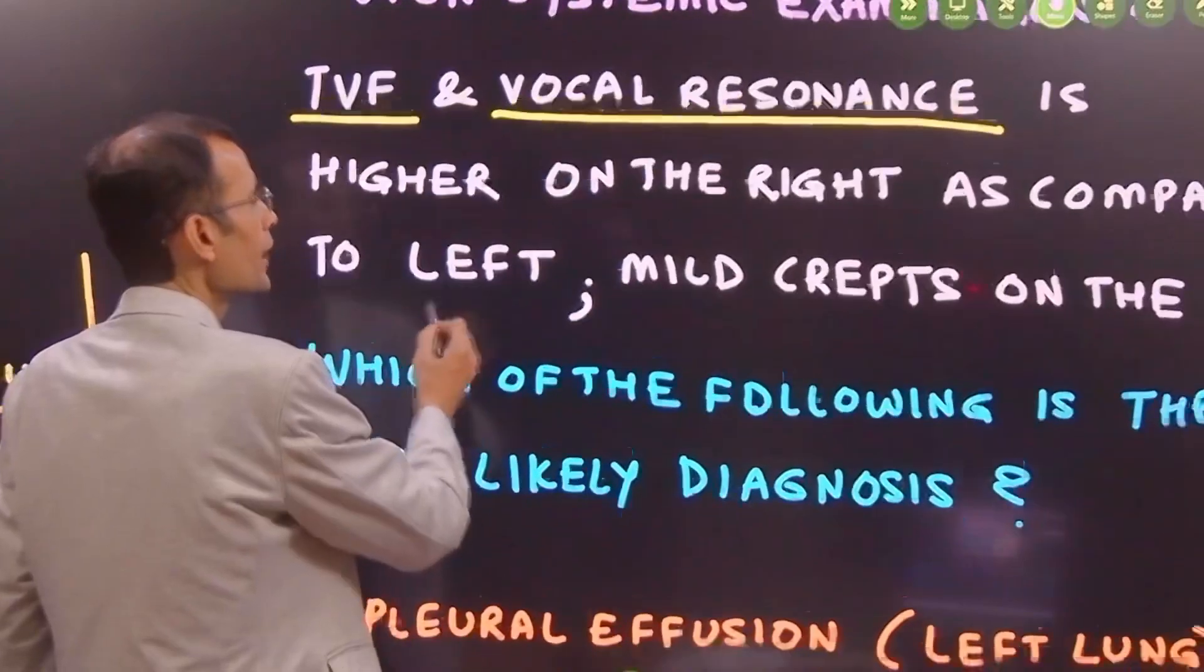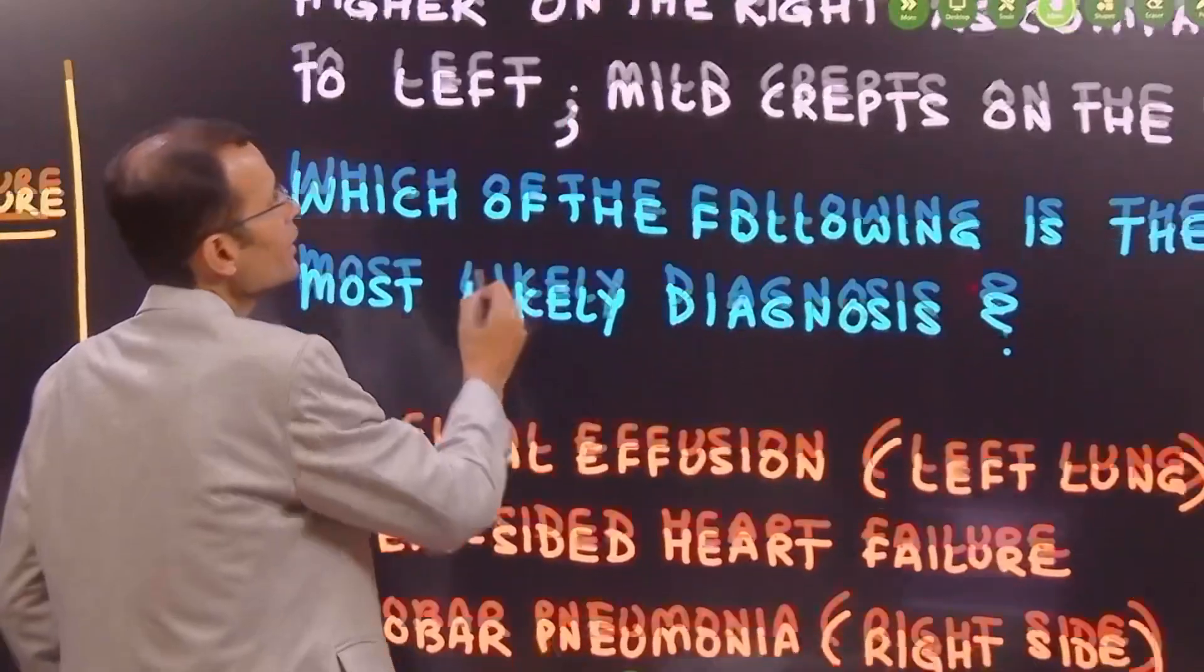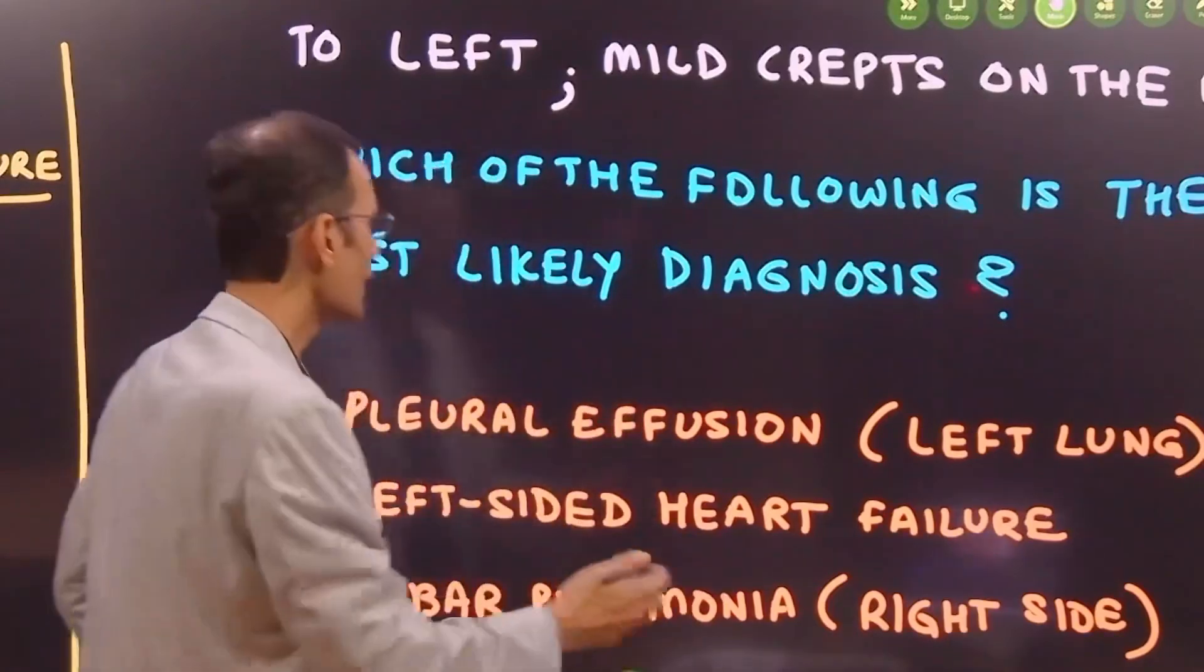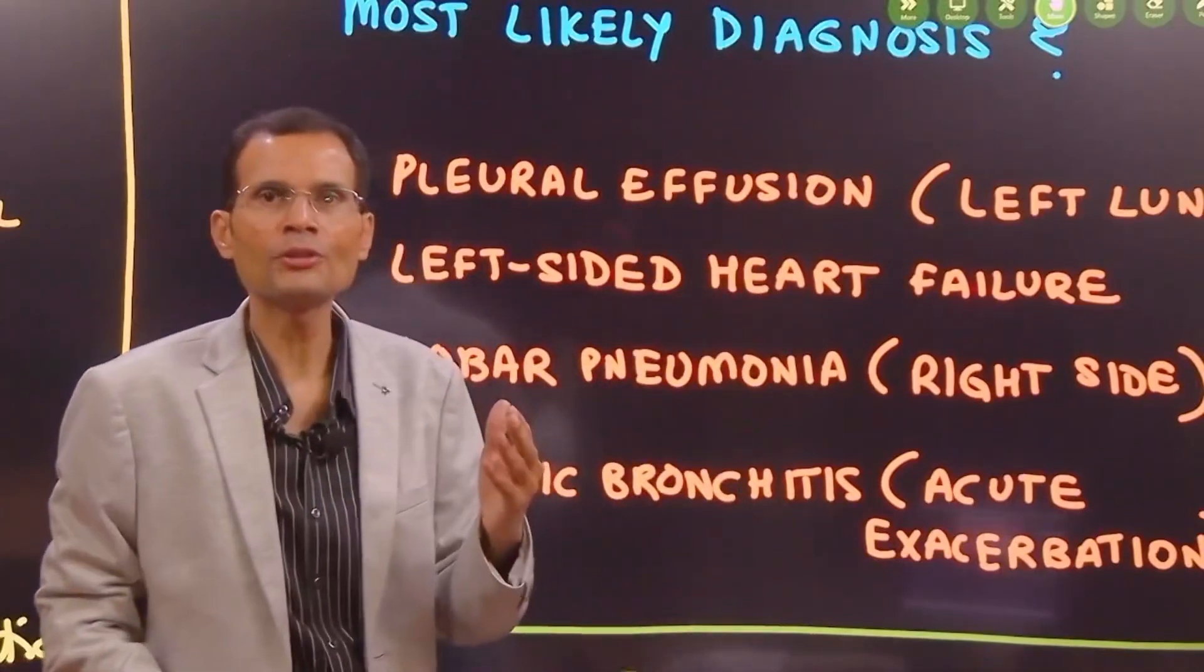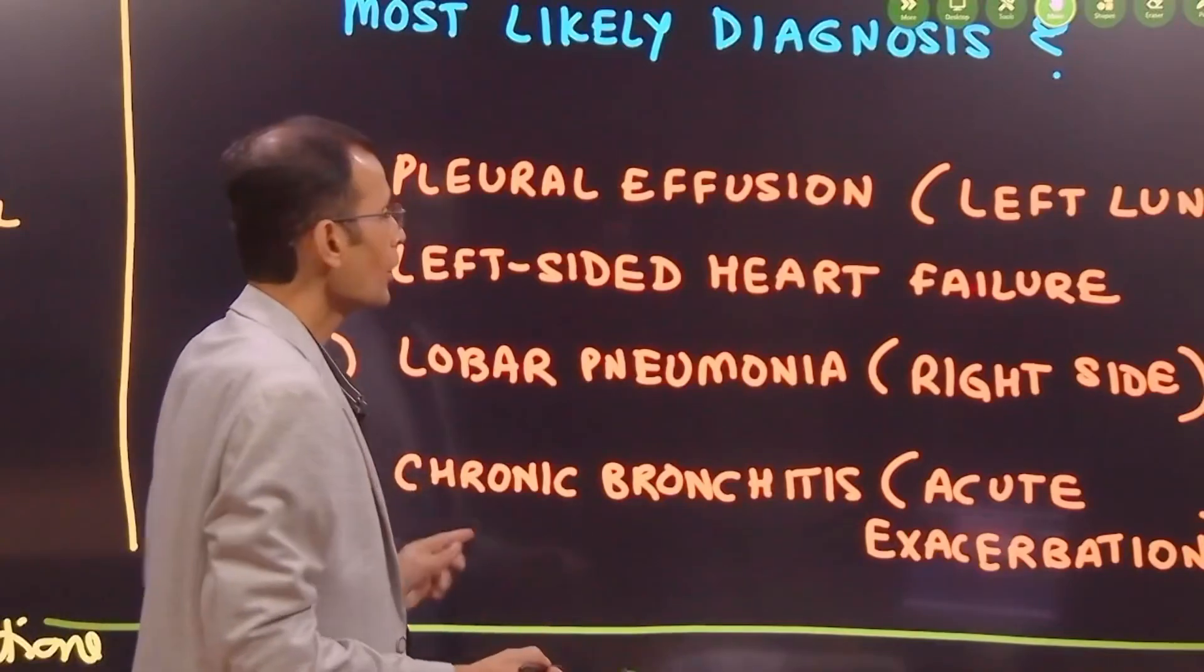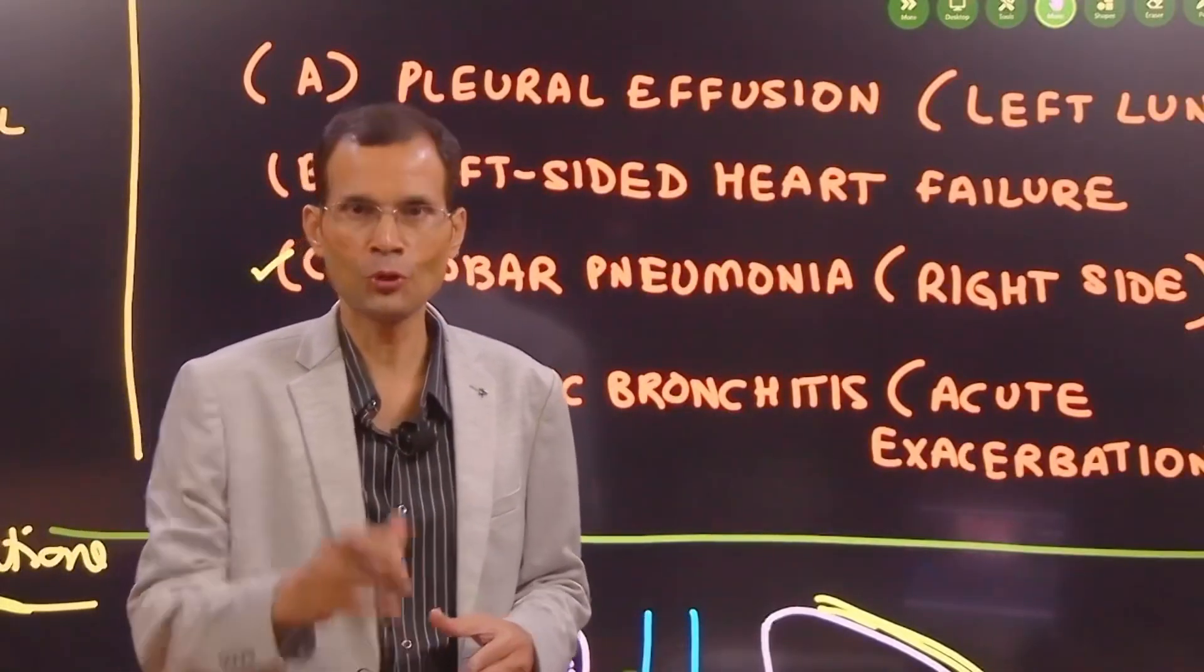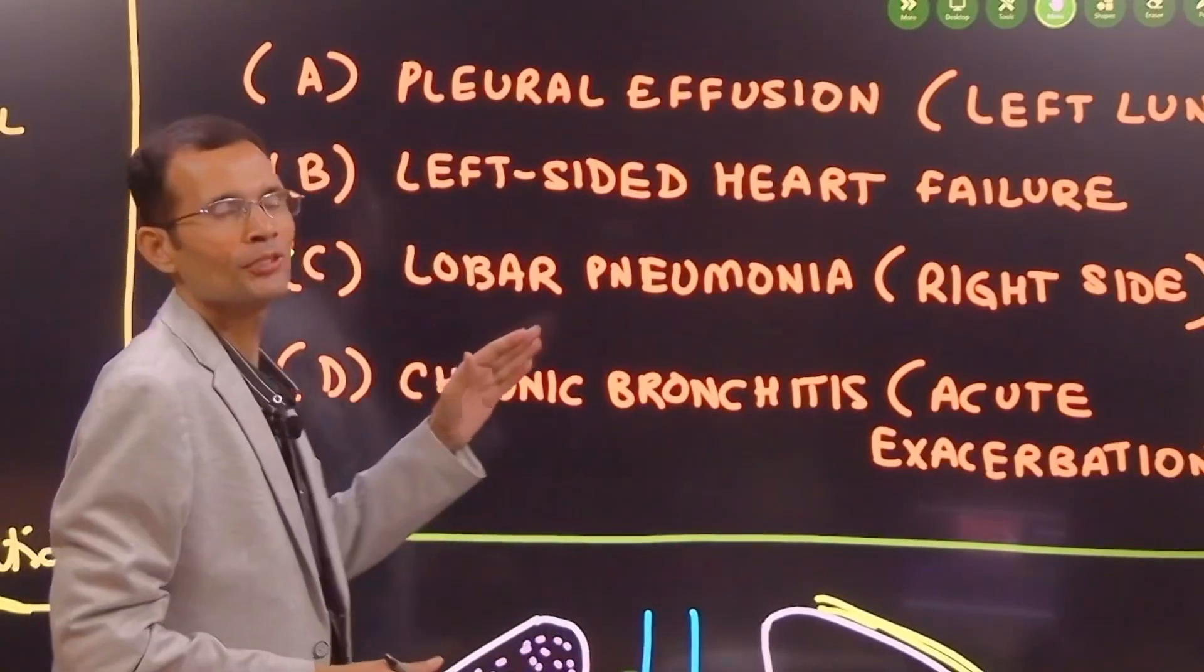So the question is, which of the following is the most likely diagnosis? Have you got the answer? Okay, anyways, let's check it out. The options: first, pleural effusion on the left side, or left-sided heart failure, or lobar pneumonia on the right side, or is it chronic bronchitis with acute exacerbation? You want to answer now? Okay, the answer is lobar pneumonia on the right side.